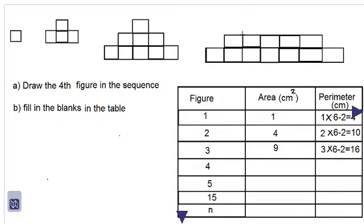And after that, five subtract two is three, so we have three blocks on top. And after that, three subtract two is one, so we have one block here. And that is our fourth diagram in the sequence. We are asked to fill in the blanks in the table, so for the fourth figure...